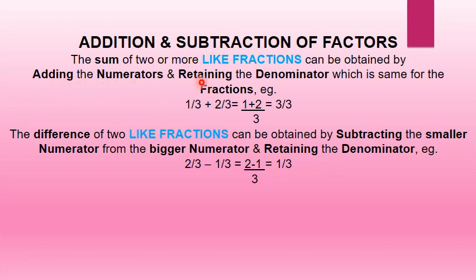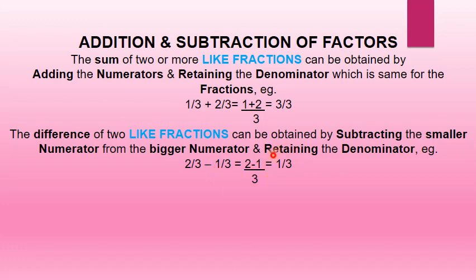Addition and subtraction of like fractions. For example, 1 upon 3 plus 2 upon 3: since 3 is the common denominator, it is retained and numerators 1 and 2 are added, giving 3 upon 3. The difference of two like fractions is obtained by subtracting the smaller numerator from the bigger numerator and retaining the denominator. For example, 2 upon 3 minus 1 upon 3 equals 1 upon 3.